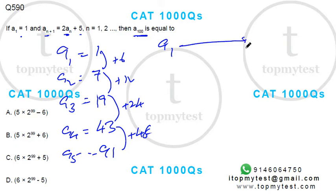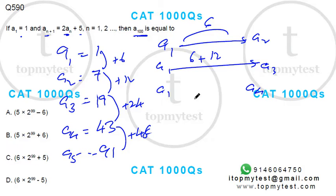So if I have to go from a₁ to a₂, I'll add 6. a₁ to a₃, I'll add 6 plus 12. From a₁ to a₄, I'll add 6 plus 12 plus 24.